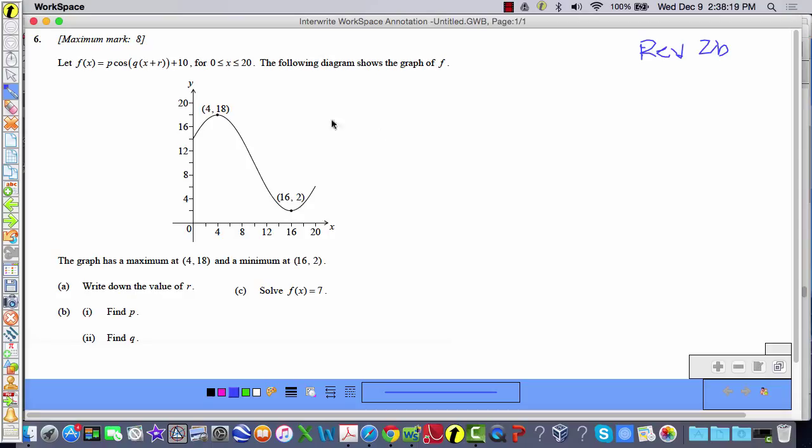Alright, so here we go. We've got a sketch of this function right here. I'm making a video, Alex. I've got a sketch of this function right here. It's a trigonometric function. It's cosine. We've got a max and we have a min. And they want us to write down some values.